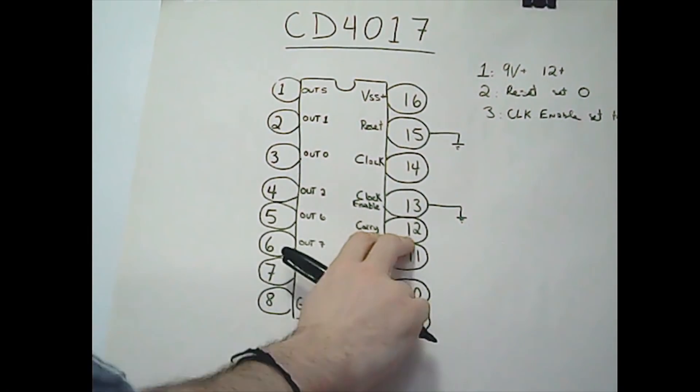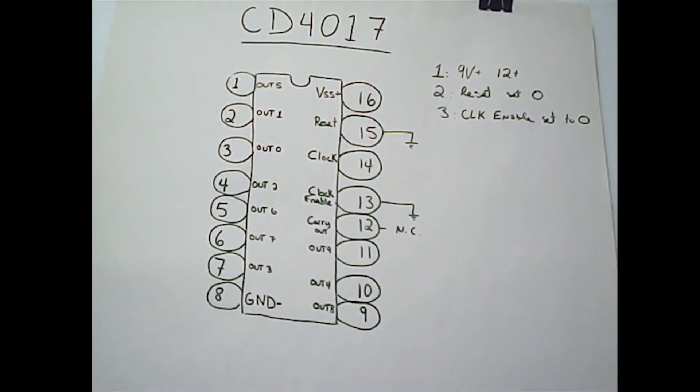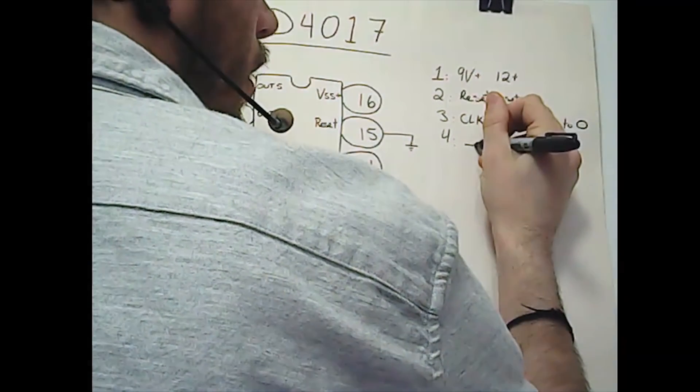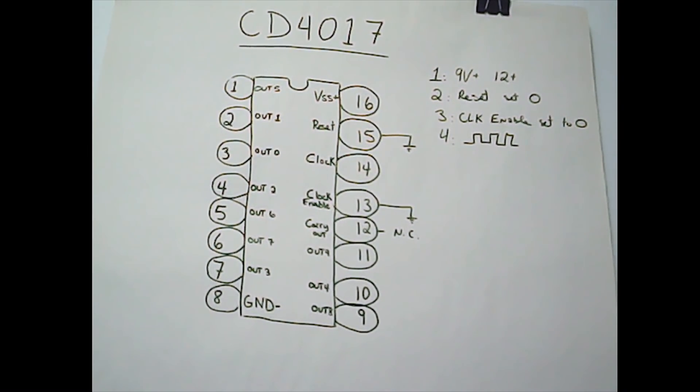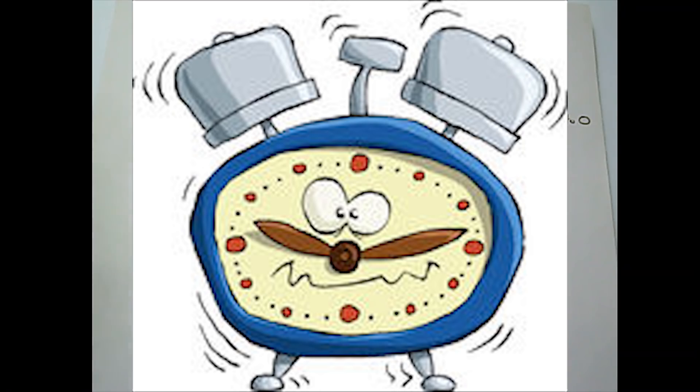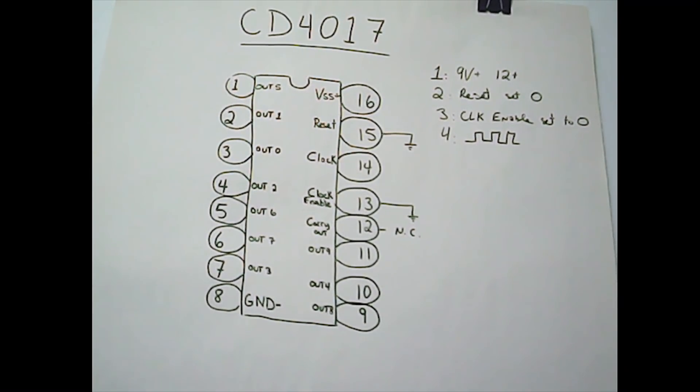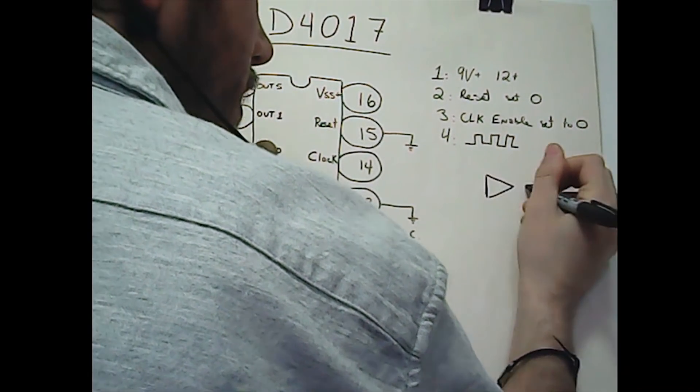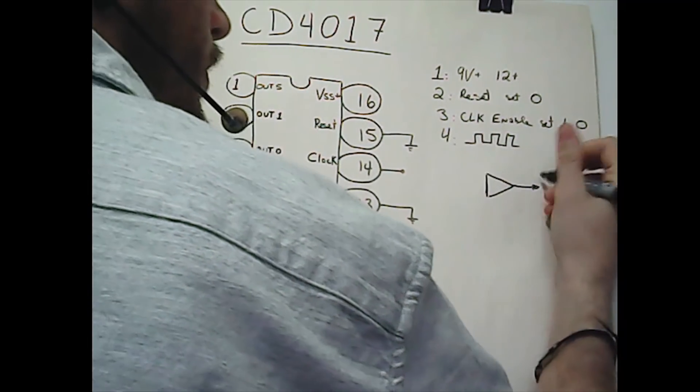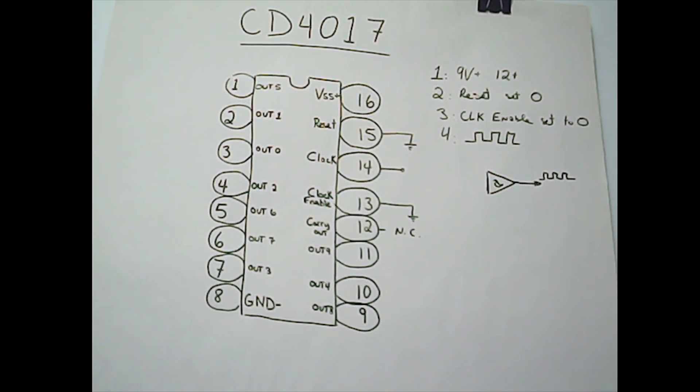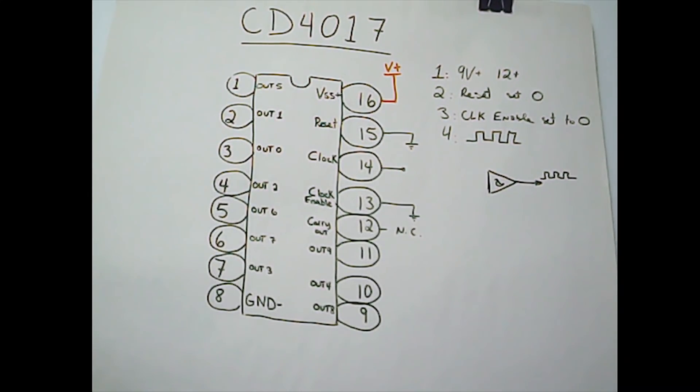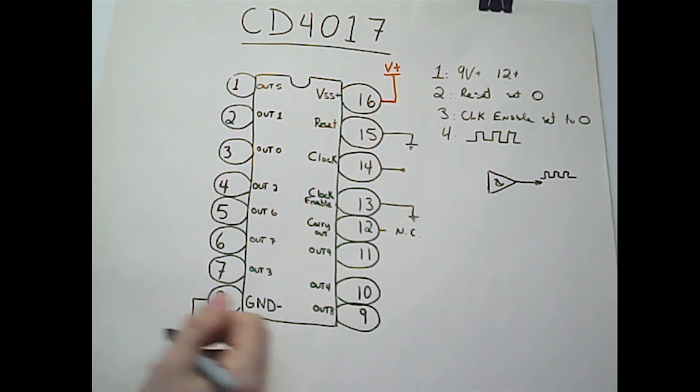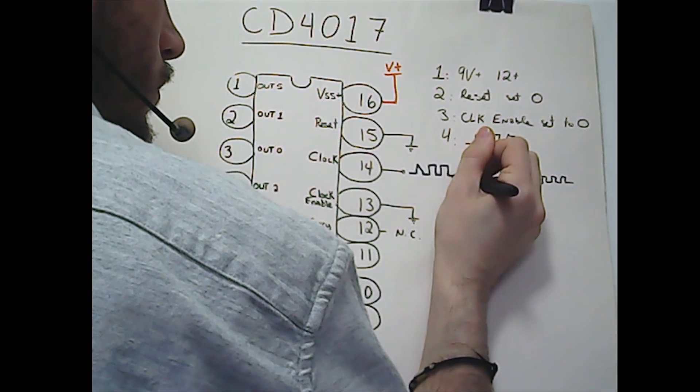Last condition is the clock. You must feed the clock to this IC so it starts to count. Where are we going to get the clock? We already built one in the first episode. Take one of your inverter oscillators and feed it to pin 14. It will serve as a clock.